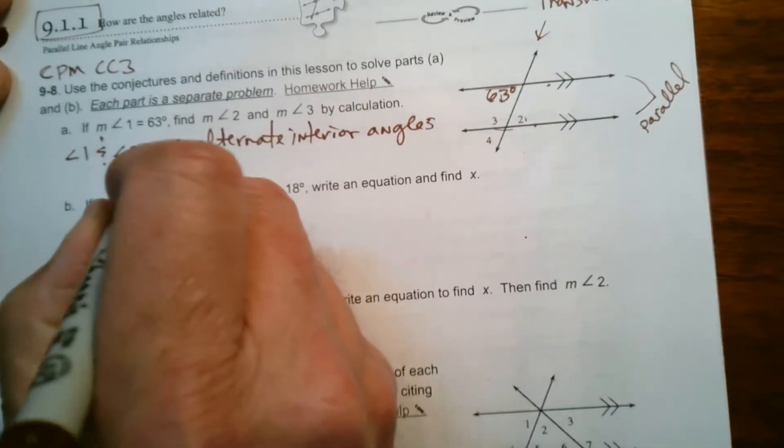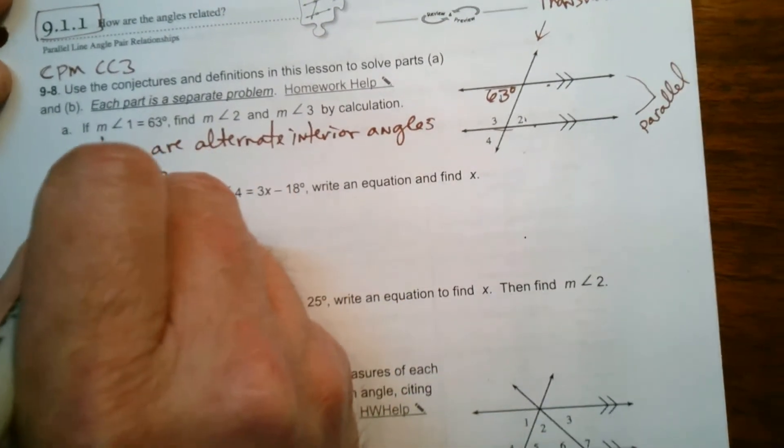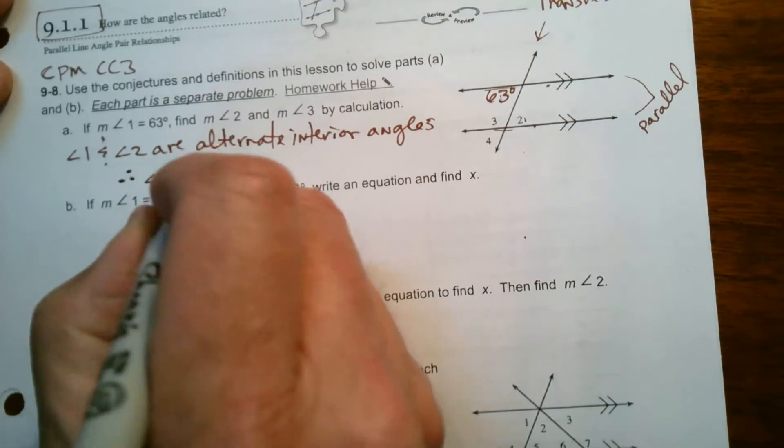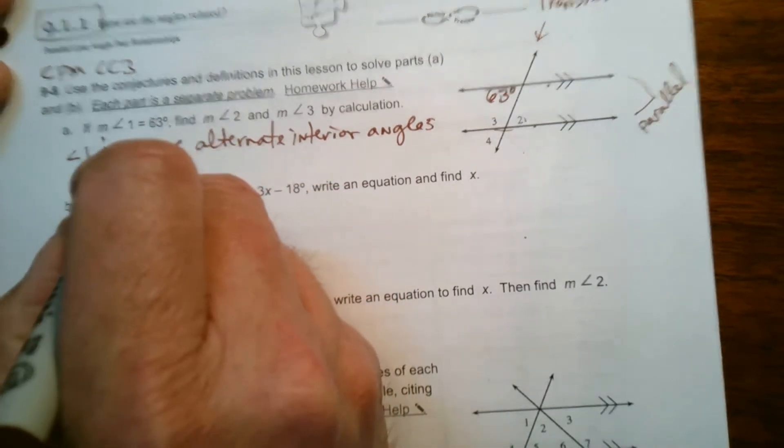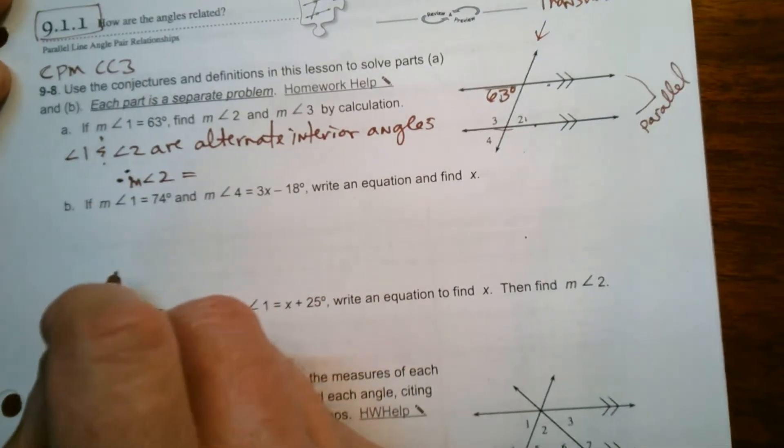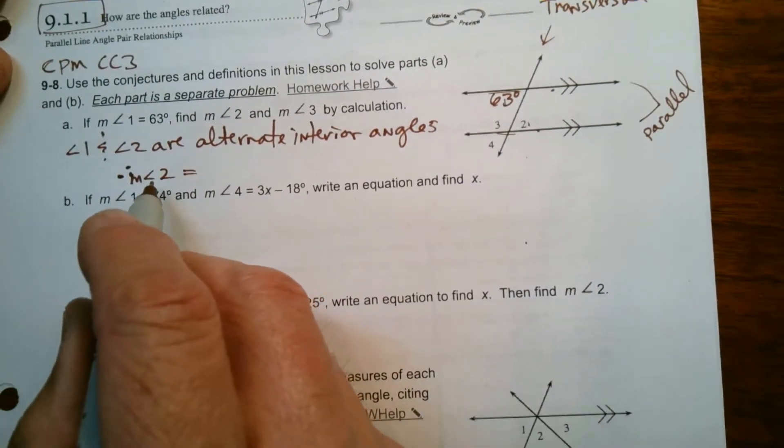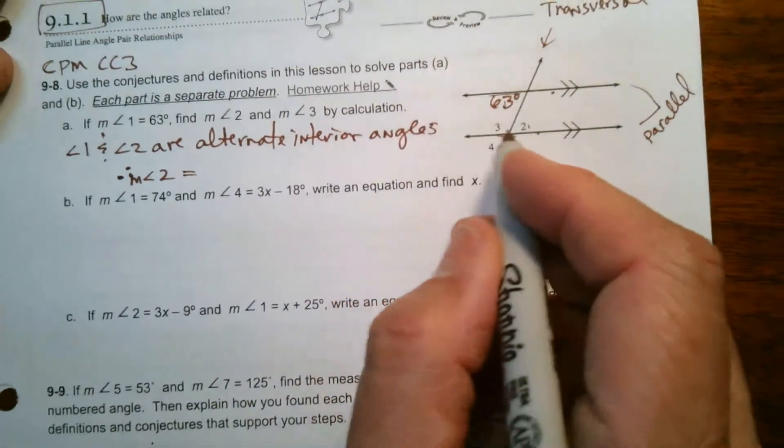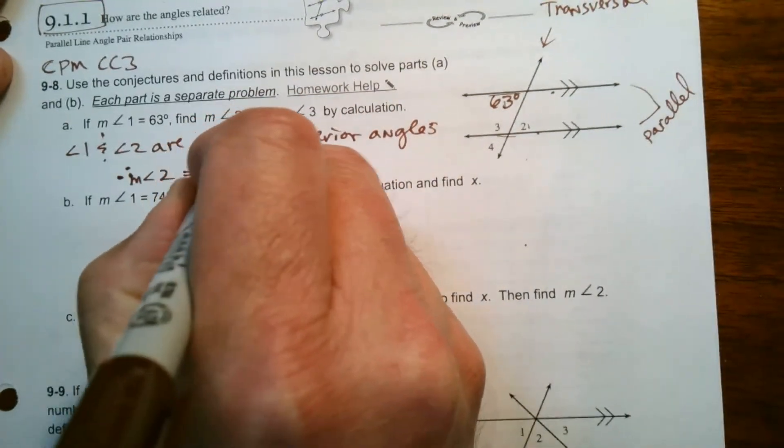So angle 2, therefore, angle 2 is equal to, or I should say the measure of angle 2. So therefore, these little three dots is another way of saying therefore. Therefore, measure of angle 2 is equal to 63 degrees also.